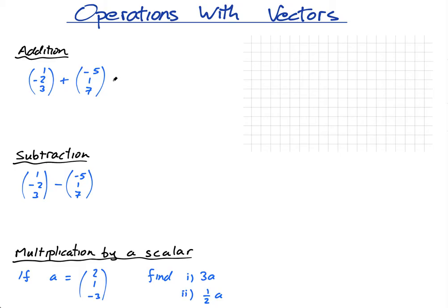To add vectors, it's very straightforward. I just add the i components, add the j components, add the k components. So 1 minus 5 is negative 4, minus 2 plus 1 is negative 1, 3 plus 7 is 10. So this vector plus this vector equals this vector. Easy.